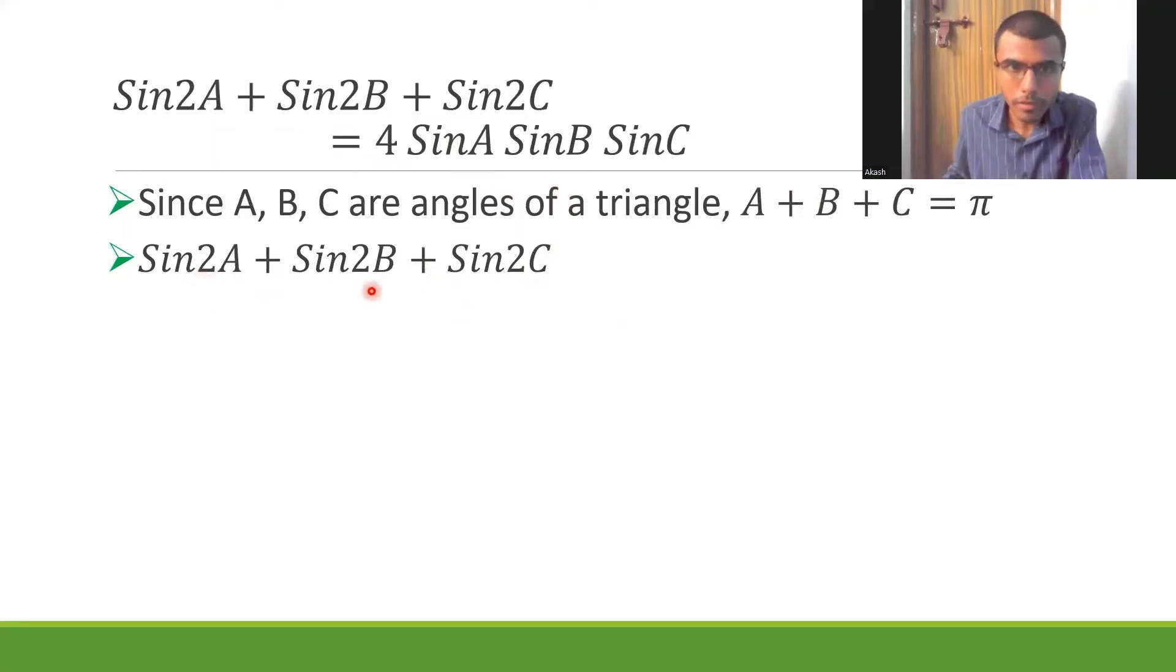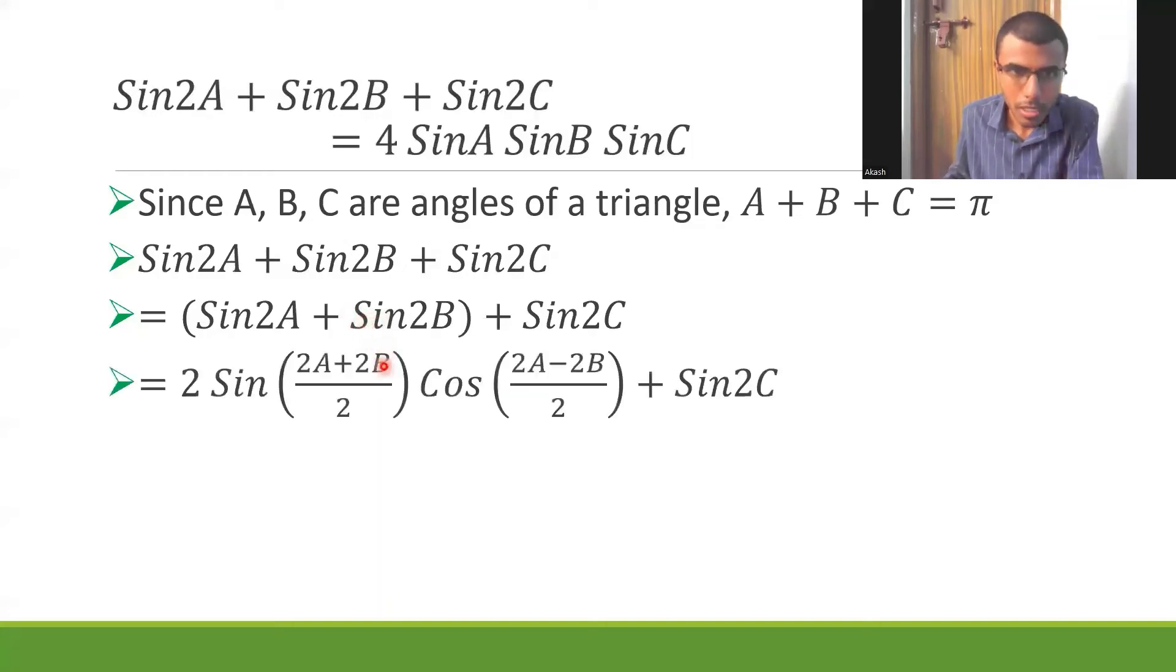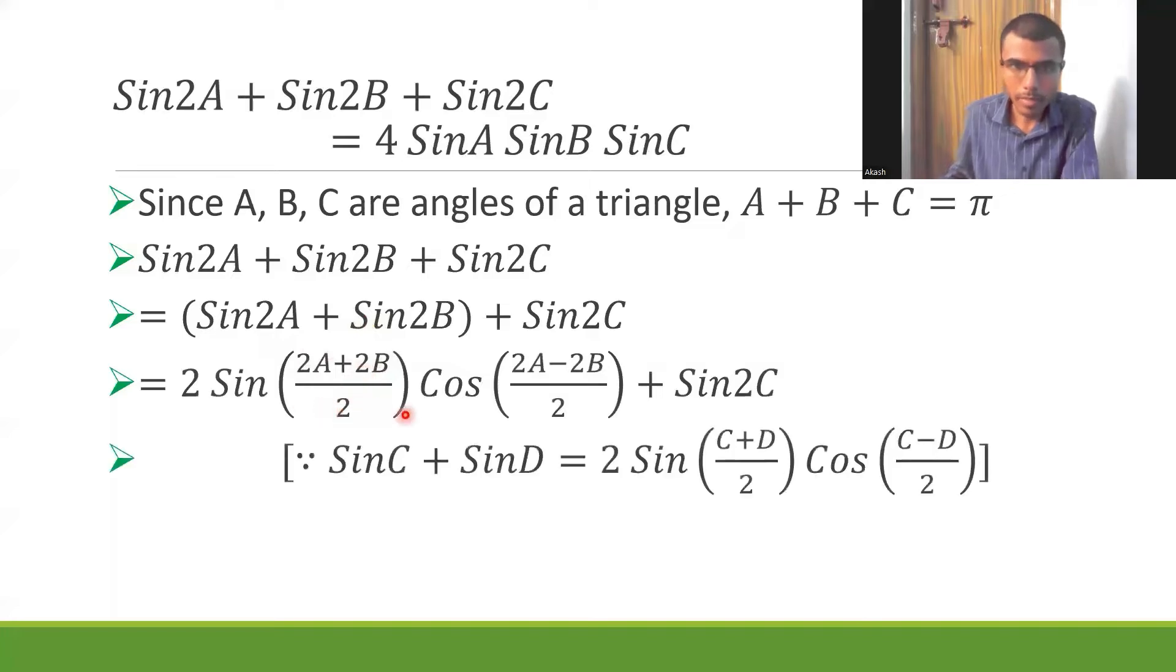Now what I'm going to do is I'm going to group the first two terms in a bracket and then I'm going to apply a certain formula. See, I took them in one bracket so that it would be very clear to the examiner that I'm going to apply the formula on these two terms. Now this is nothing but equal to this because of this formula: sinC + sinD is 2sin(C+D)/2 cos(C-D)/2.